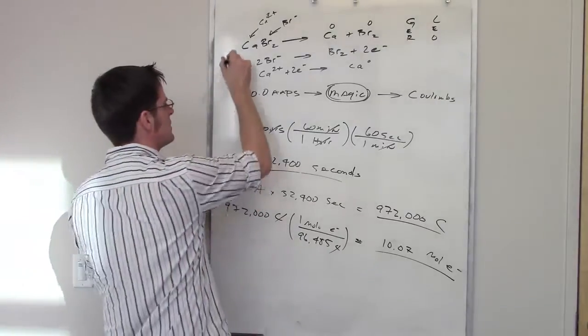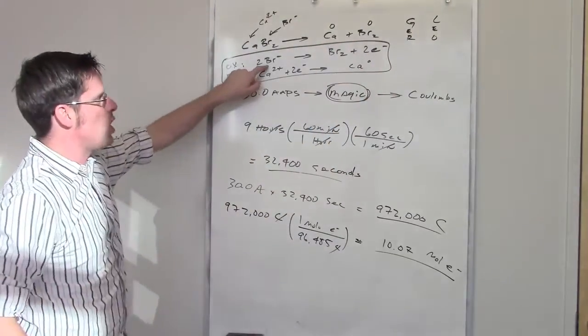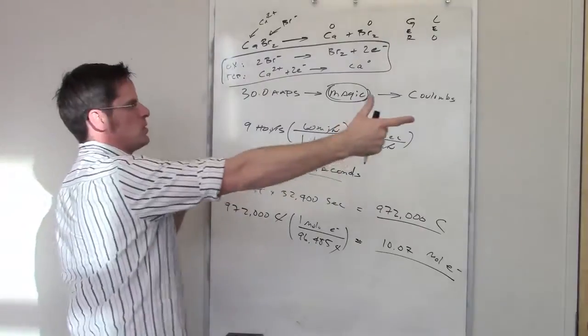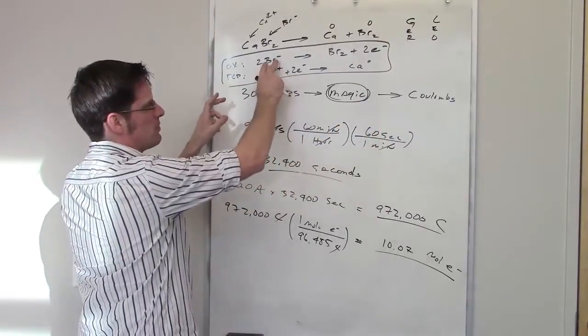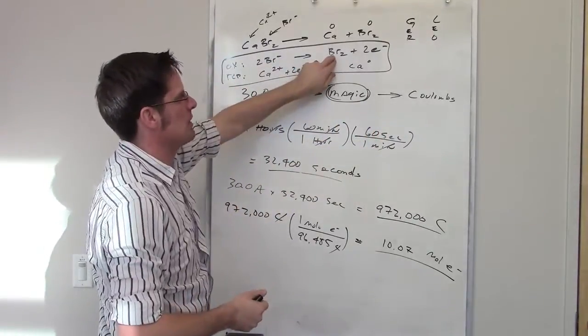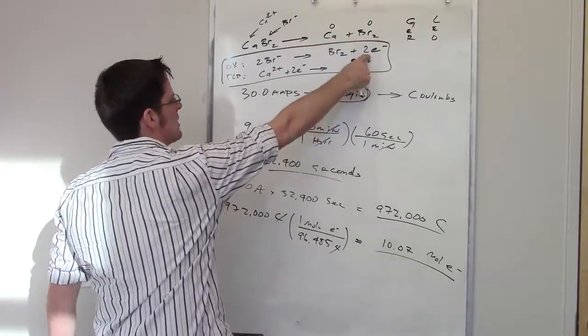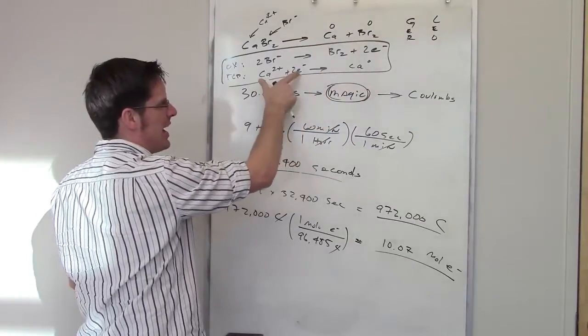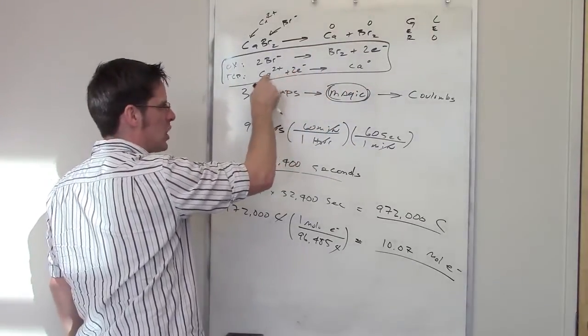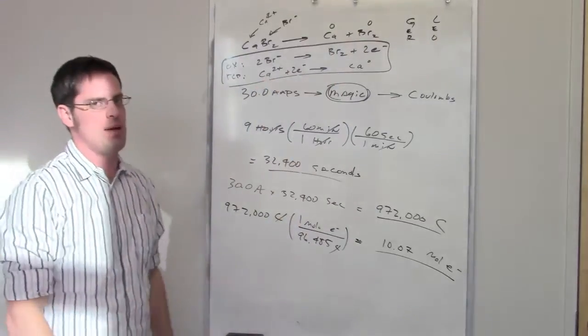In essence, what's happening in this process is my bromide is spitting out two electrons, and those two atoms of bromine are combining in the process to become Br2. Those two electrons are then feeding into calcium two plus ion and are being used or absorbed by that ion to turn it into calcium zero, which is calcium metal.